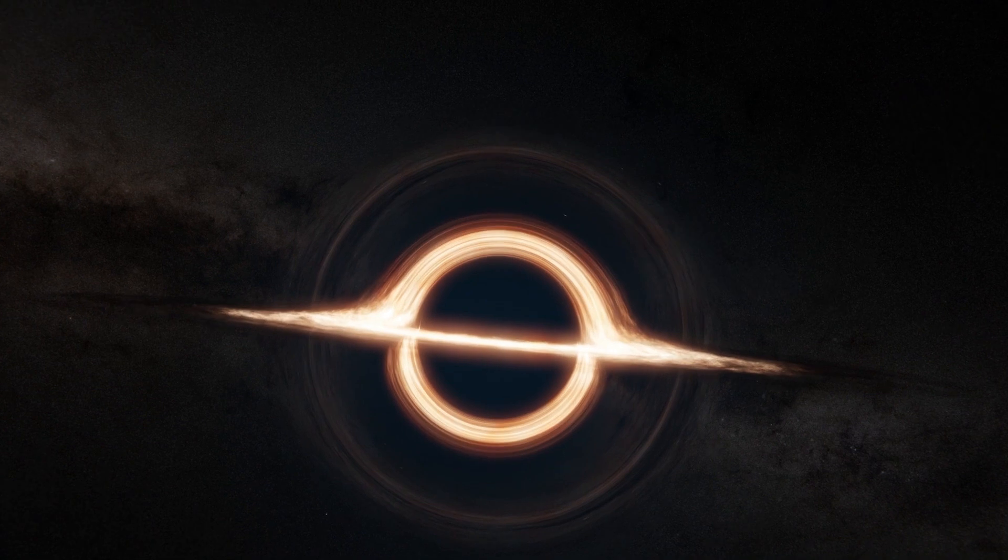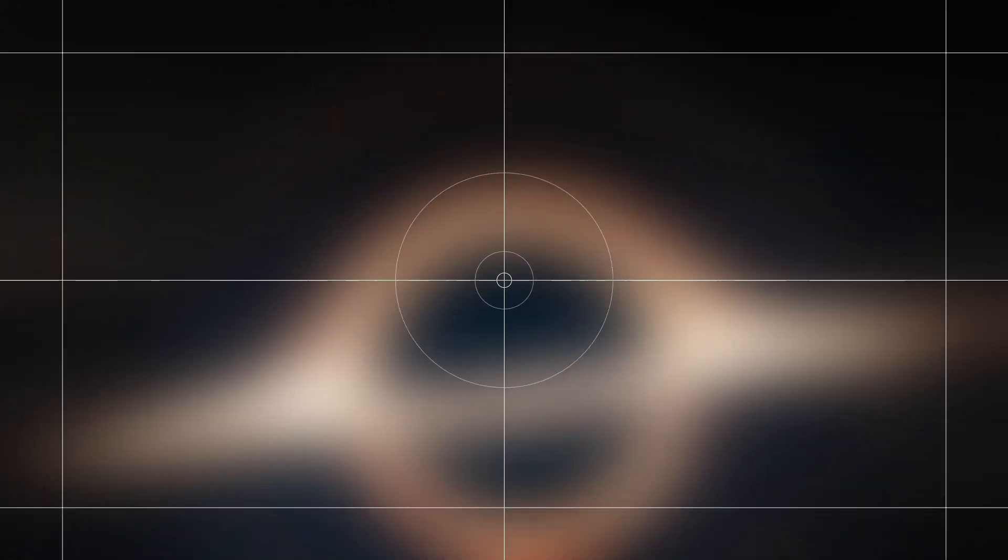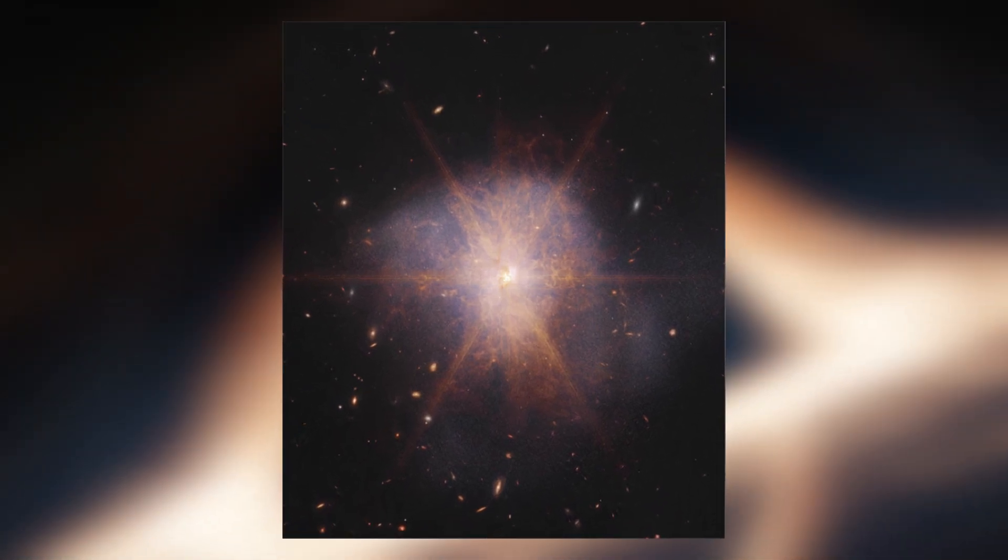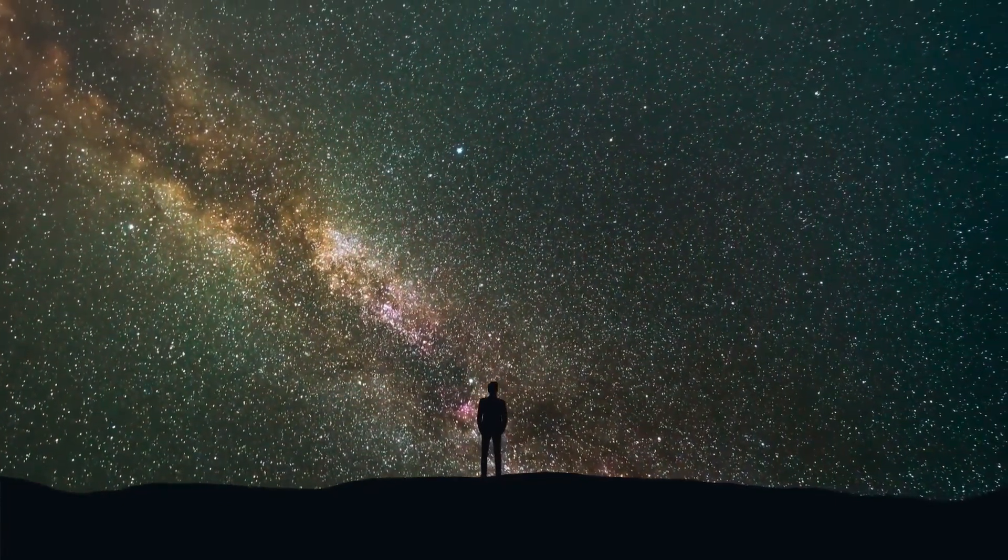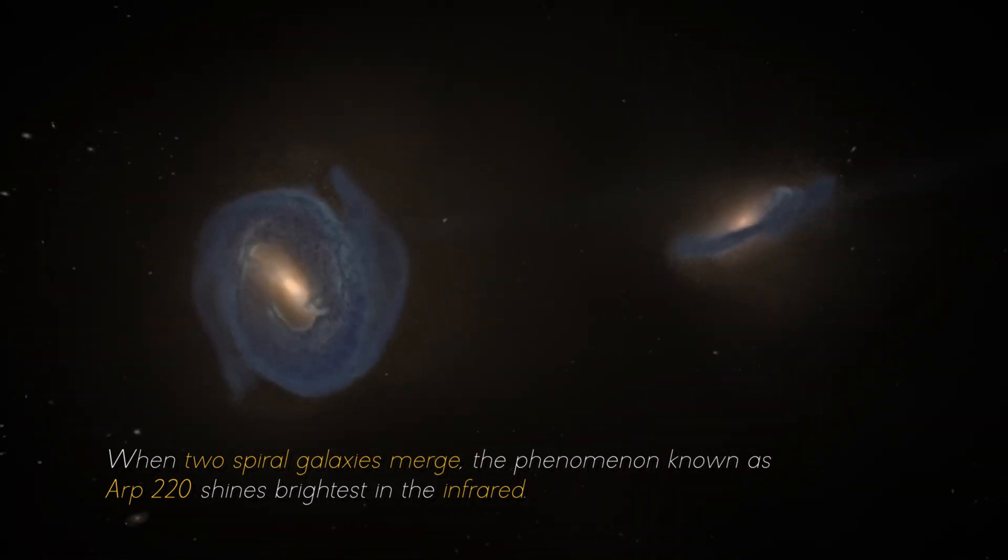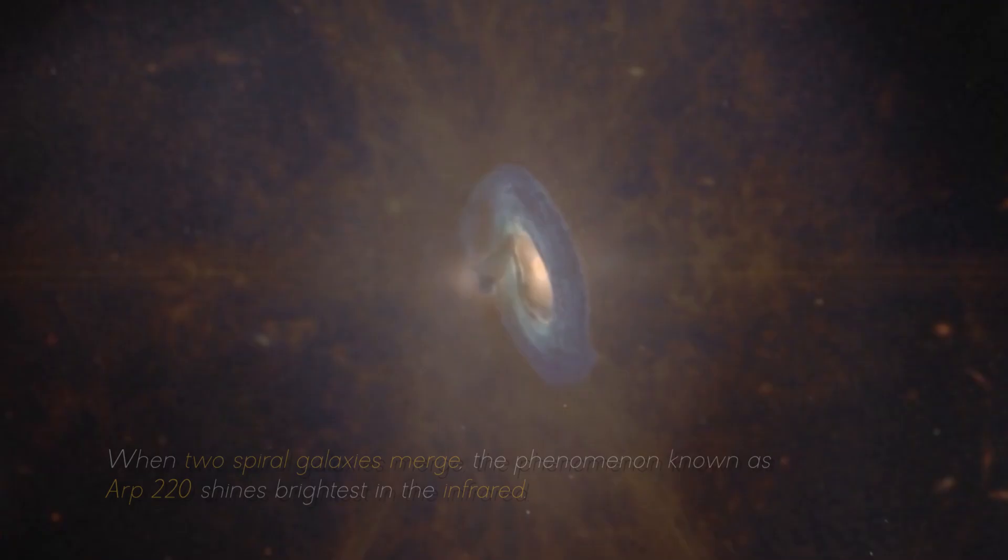But that's not all. NASA has made an exciting announcement about the galactic merger of ARP 220, which was captured by the James Webb Space Telescope. This impressive galactic merger can be seen shining among other galaxies in the night sky. When two spiral galaxies emerge, the phenomenon known as ARP 220 shines the brightest in the infrared.